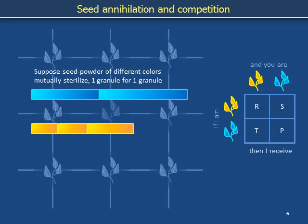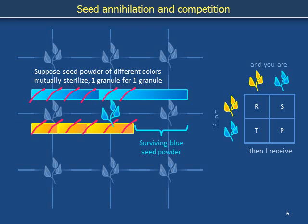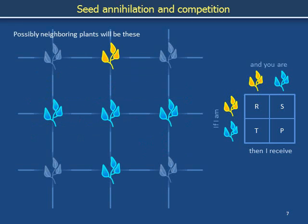Suppose that the seeds of different types of plants are mutually toxic, sterilizing each other one seed of one type for one seed of the other type. After pairs of seeds have cancelled out, an excess of unsterilized blue seeds survives in this example, so the center site is occupied by a blue plant during the next generation. The same kind of so-called winner-takes-all process determines the type of plant that will occupy the other sites in the lattice.